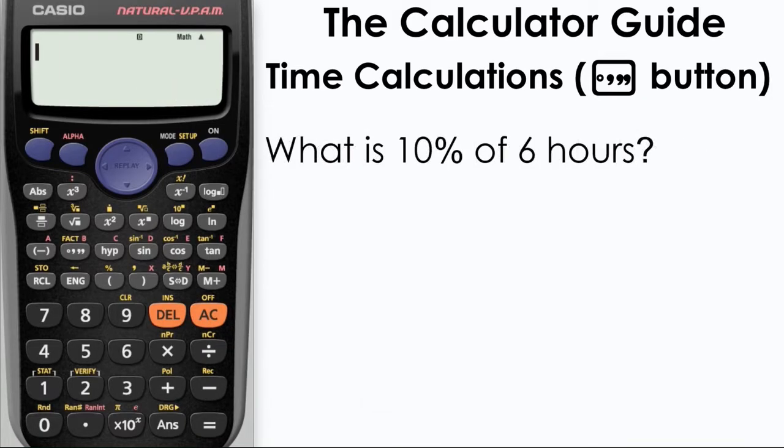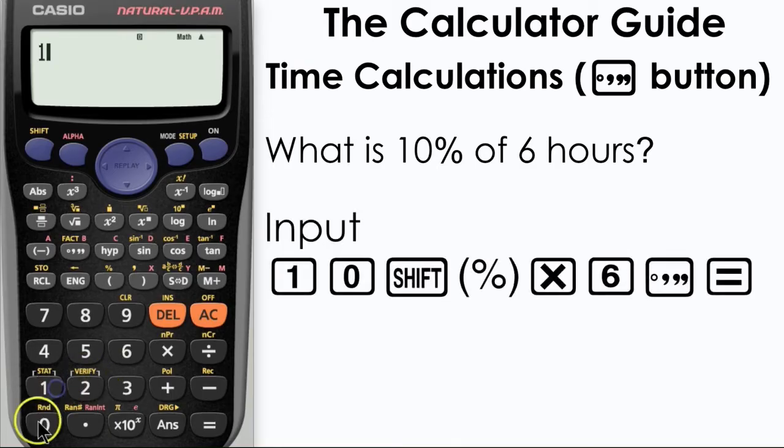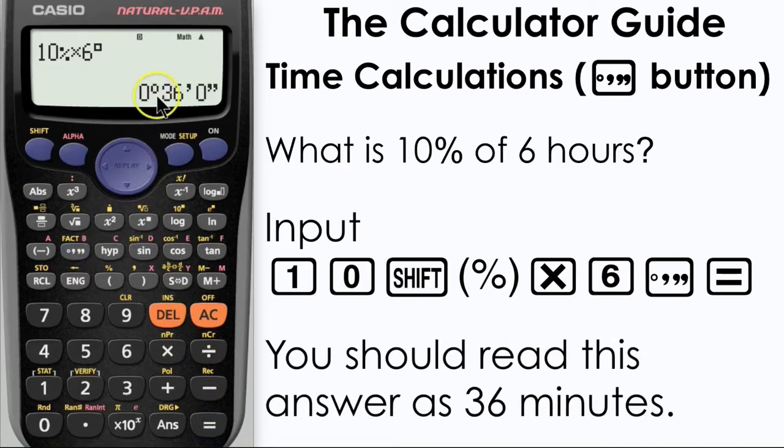We're going to use the calculator now to find 10% of six hours. We're going to input 10 and then shift and the percentage sign and then times by six and then press the degrees minutes and seconds button and then equals. Here's our answer and we should read this as 36 minutes.